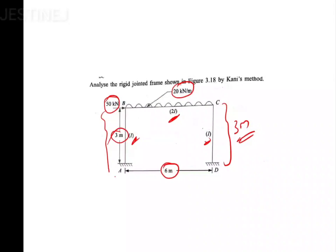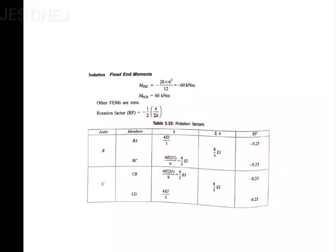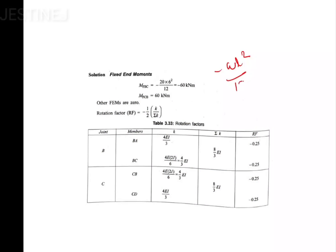The first step is to calculate the fixed end moment. It is only going to occur over the BC portion. For AB and CD there are no loads acting, so the fixed end moment for those members is zero. For the BC and CB portions, using minus WL squared by 12, you get minus 60 kilo-newton meter — this unit is very important. The fixed end moment for all remaining members is zero since no load is active on them.